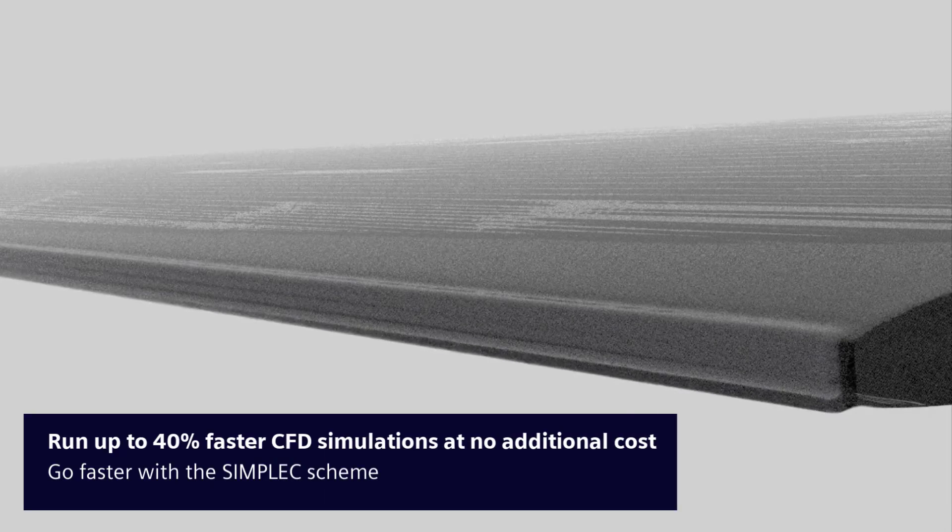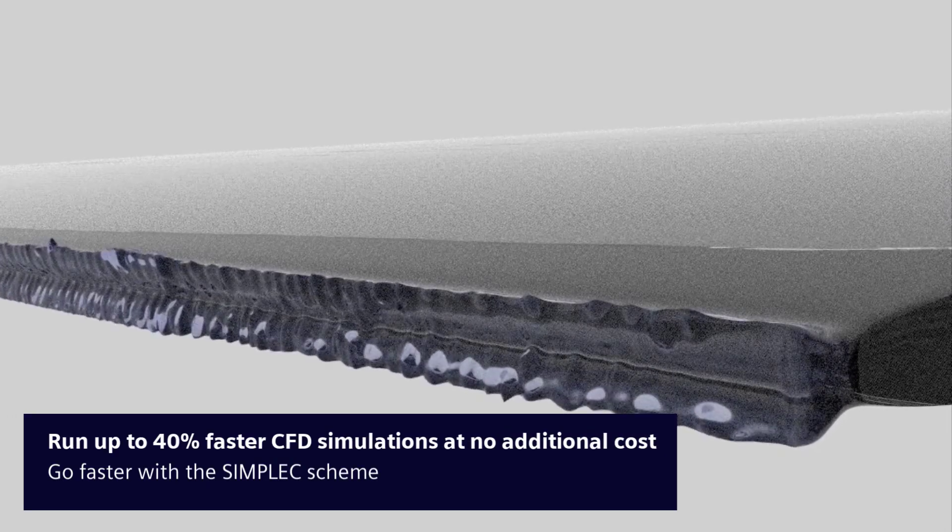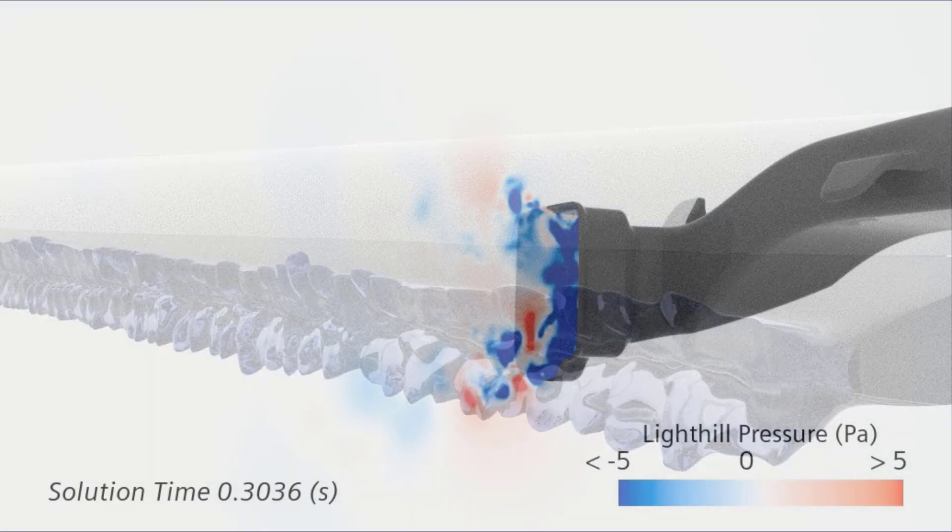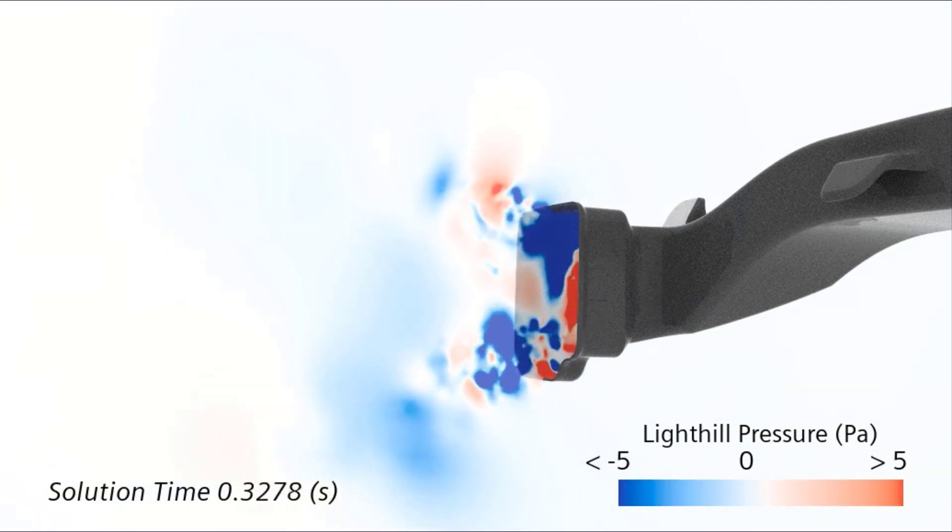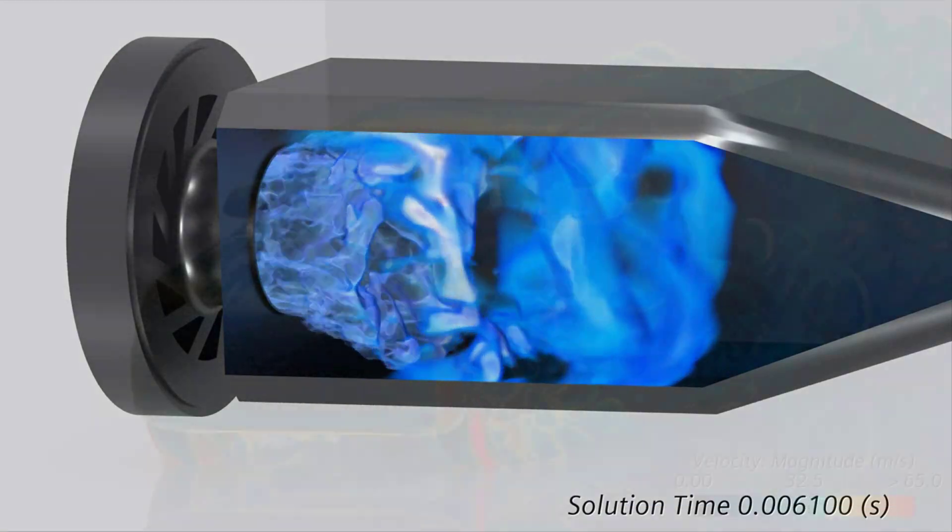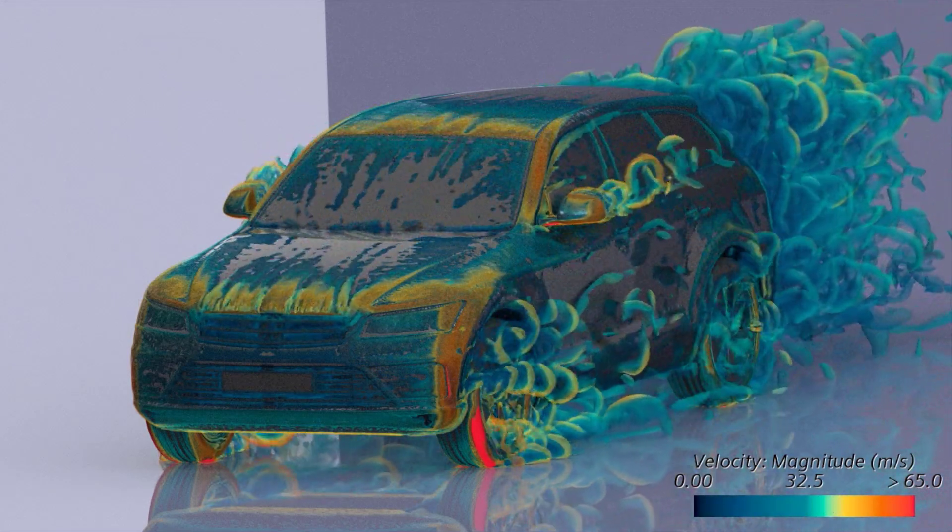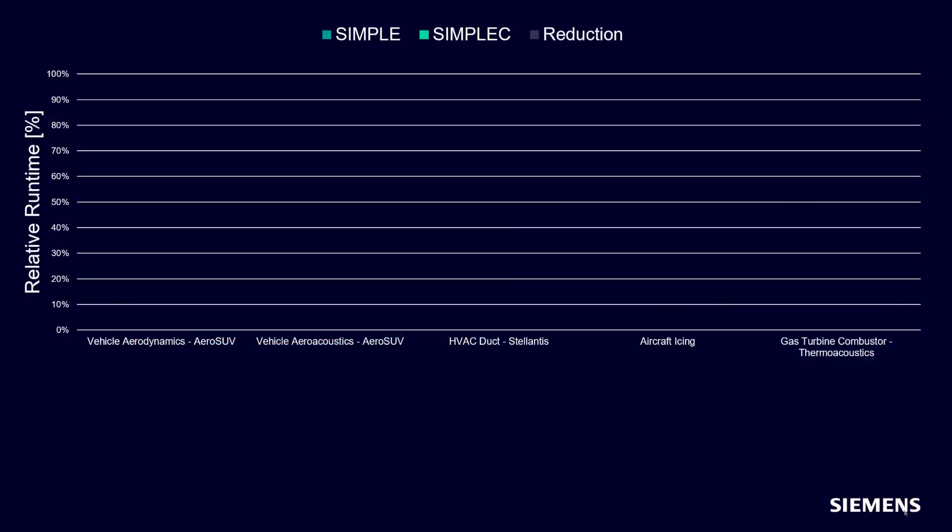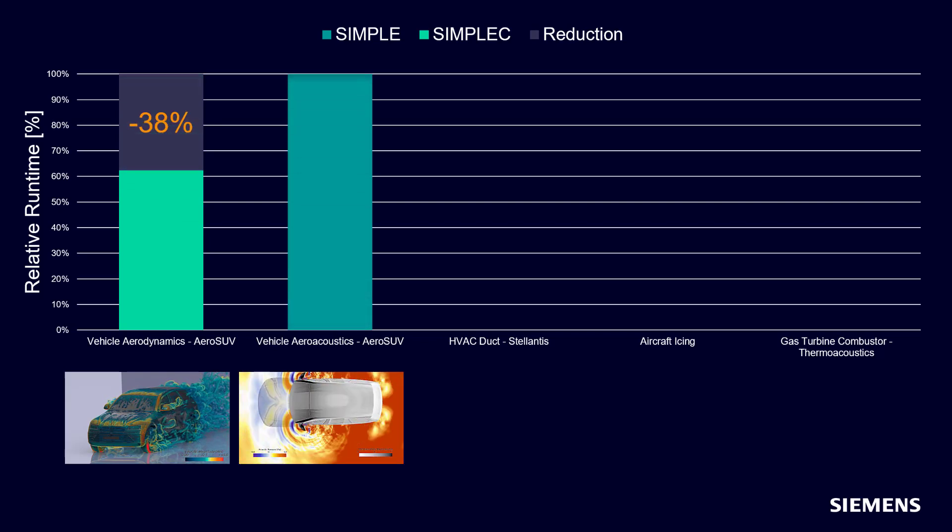At the same time, Siemens continually progresses on CFD software technology to provide you with more efficiency regardless of hardware chosen. In Simcenter Stasis Mplus 2302 we introduce a new unsteady implicit scheme for the segregated flow solver, the simple consistent, so-called simple C. Simple C enables significant acceleration for the simulation of transient flows due to a deeper convergence of the solution within the time step.